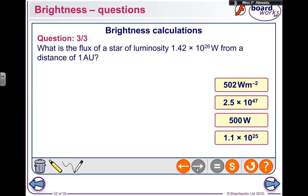Finally, the last question. What is the flux of a star of luminosity 1.42 times 10 to the power of 26 from a distance of 1 astronomical unit? So this one, I'm going to use that formula that says that the flux equals the power divided by 4 pi distance squared.